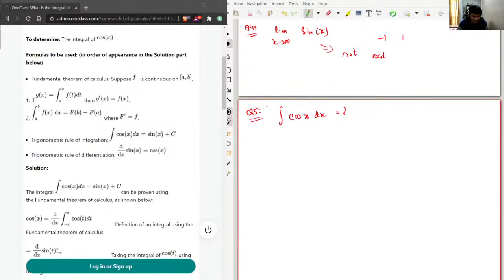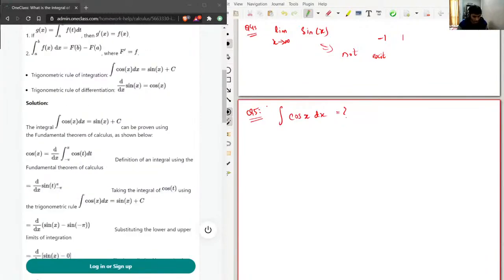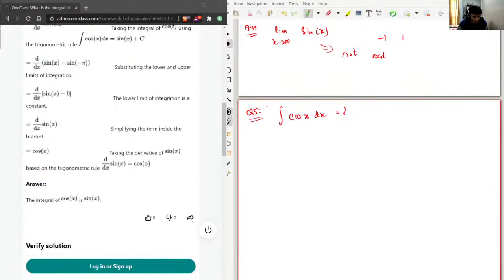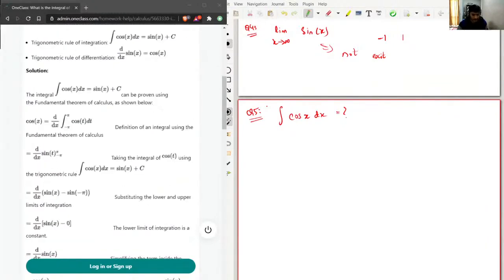For solution, I'll just follow this procedure because clearly we haven't ever seen the derivation of such kind of integrals. We directly know if differentiation of sine x is cosine x, then integral of cosine x will be sine x only.